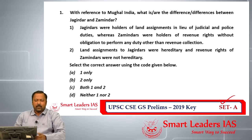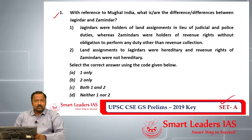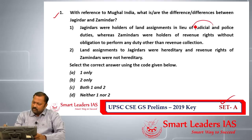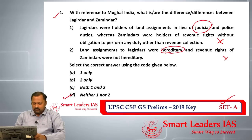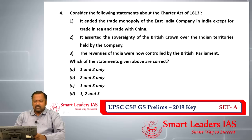The first question is about Mughal India — the differences between Jagirdar and Zaminder. They gave two statements. Jagirdars were holders of land assignment in lieu of judicial and police duties. However, the judicial function was not given to Jagirdars, so the first statement is wrong. Similarly, the land assignment for Jagirdars was not hereditary, so that is also not correct. Therefore, the answer for question one is neither one nor two.